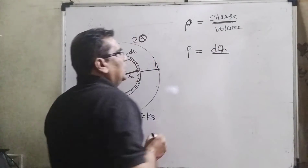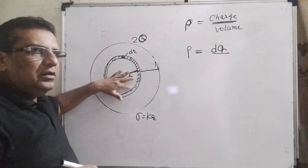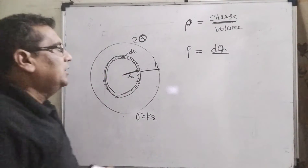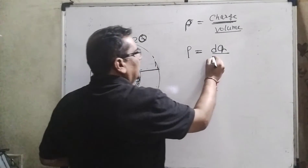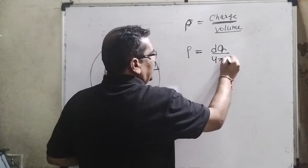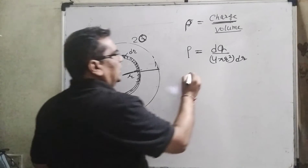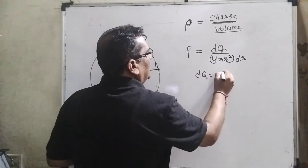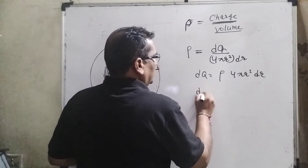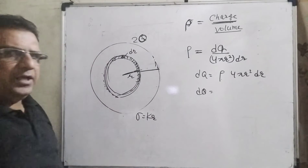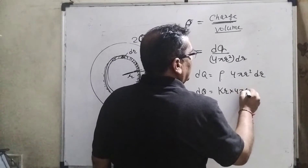We consider an element shell with charge dQ. Because we take an elemental shell, the area of the shell is 4πr² and the width is dr. So dQ equals rho times 4πr² dr. And rho is given as k times r, so substituting: dQ = k·r · 4πr² dr.